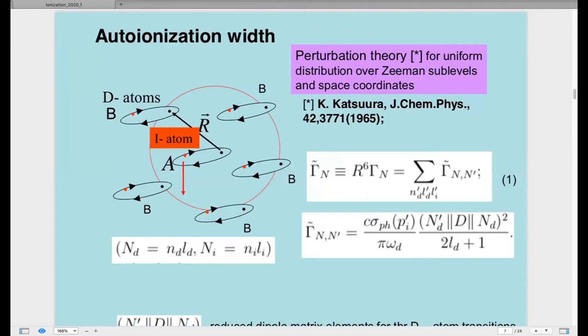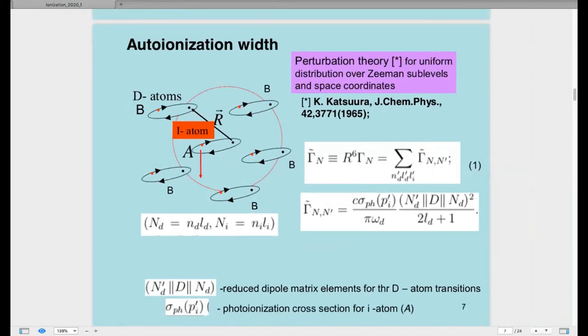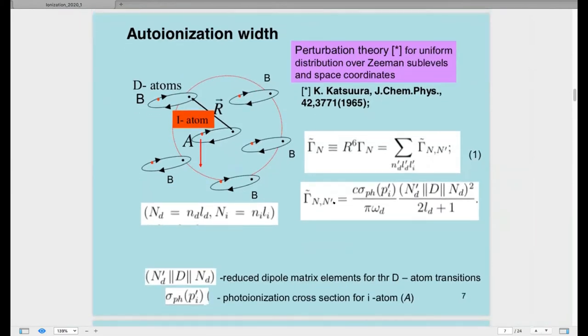So to calculate the effectivity of Penning ionization processes, we need to calculate autoionization widths. For autoionization widths, we need to know first the reduced dipole matrix elements, radial elements, for day transitions,